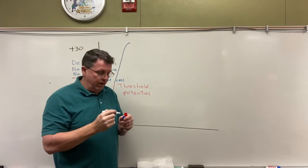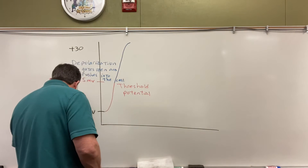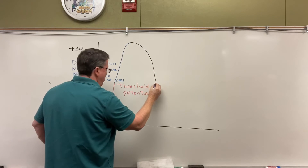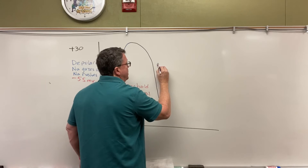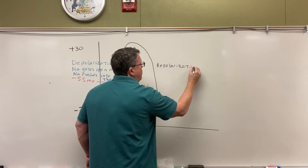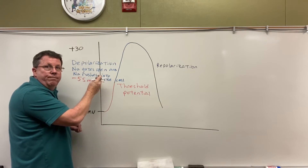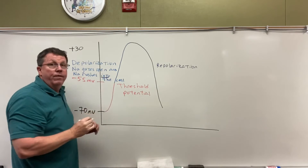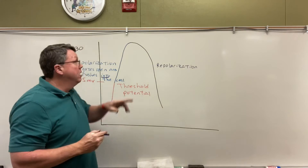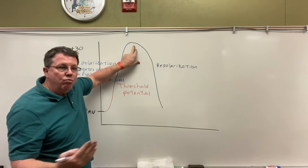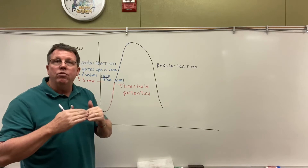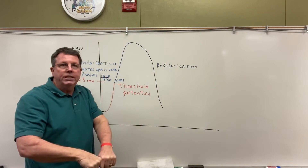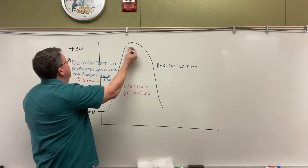So I have sodium now rushing into the inside of the neuron. When I get to the top, what's going to happen is repolarization. In repolarization, my sodium gates that were open are going to close, and my potassium gates, which are closed, are going to open. Remember, sodium is on the outside, so it went rushing into the cell. Potassium is on the inside, so it goes rushing out. Because potassium has a positive charge as it rushes out, the voltage inside of my nerve is going to go back towards negative. Sodium came rushing in with all its positive charges, which is why we went up to plus 30 millivolts.